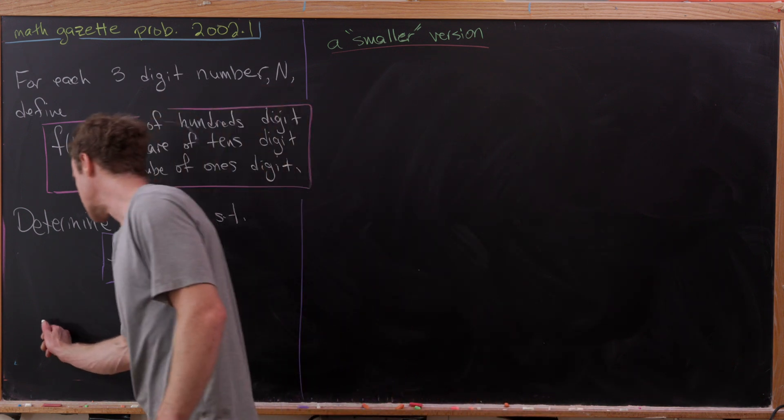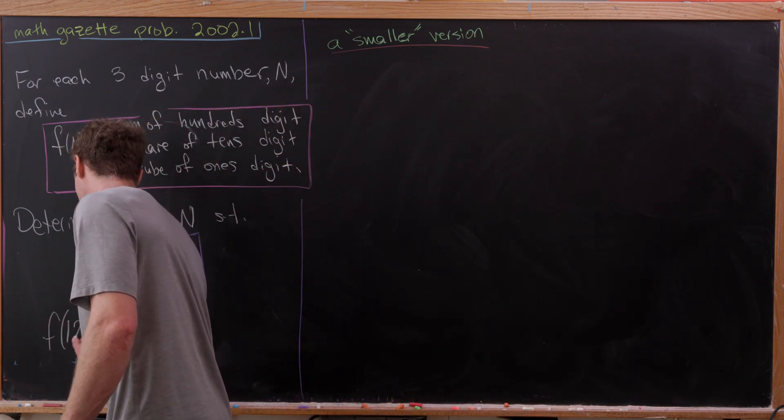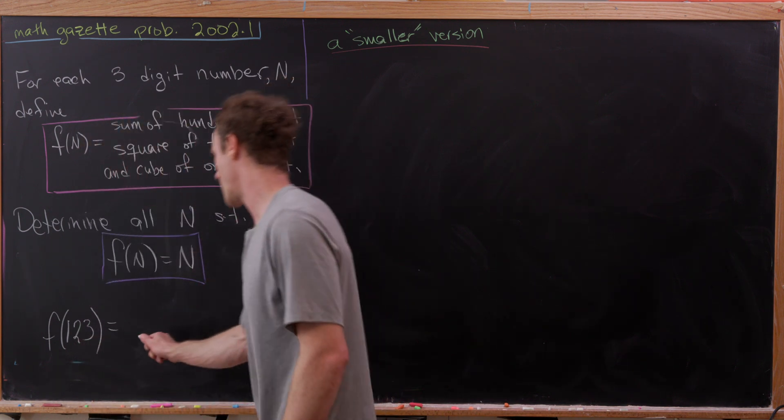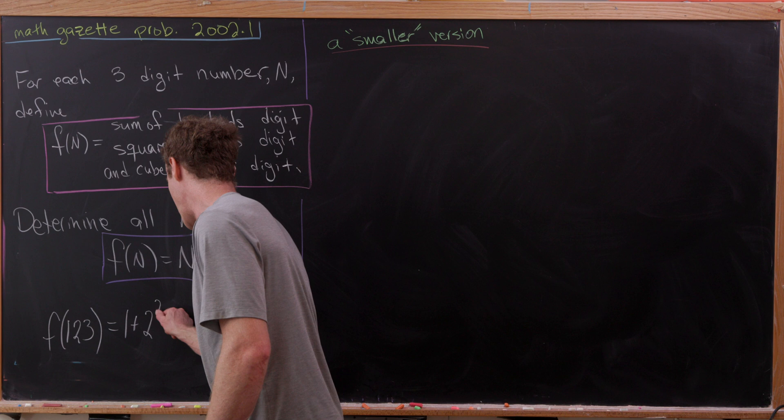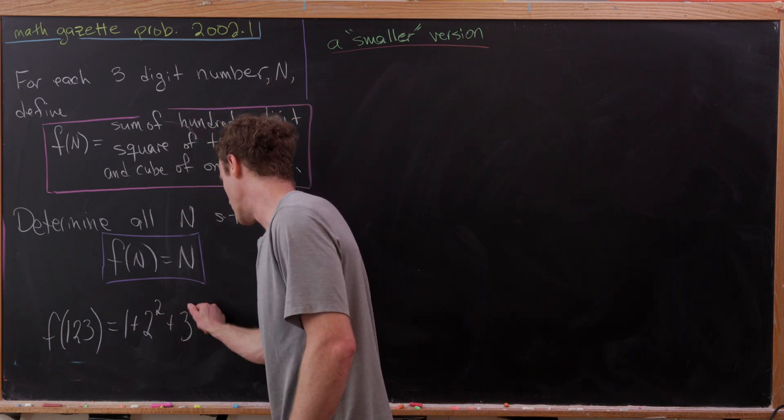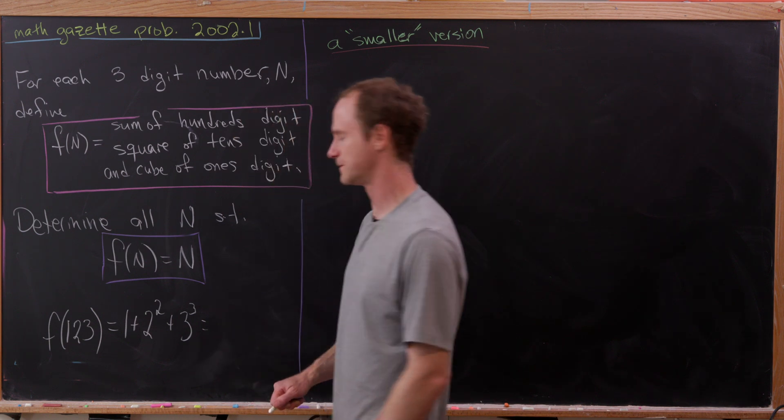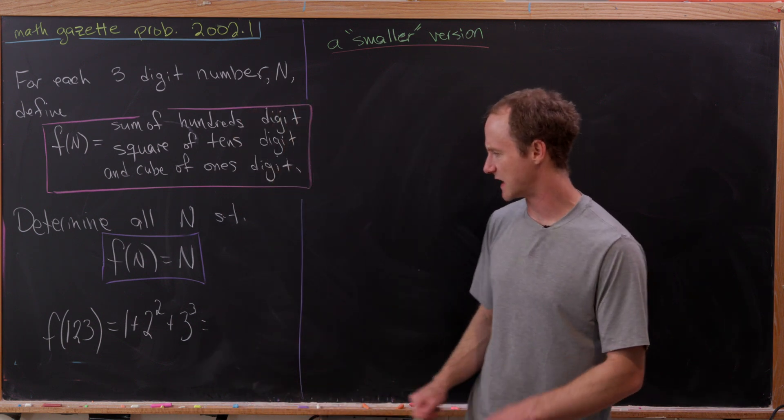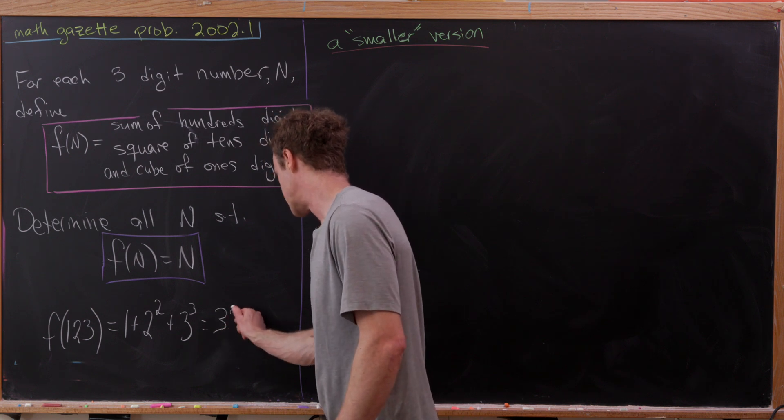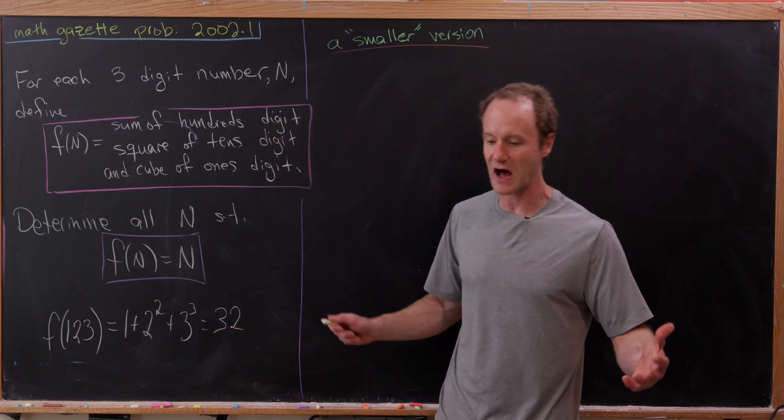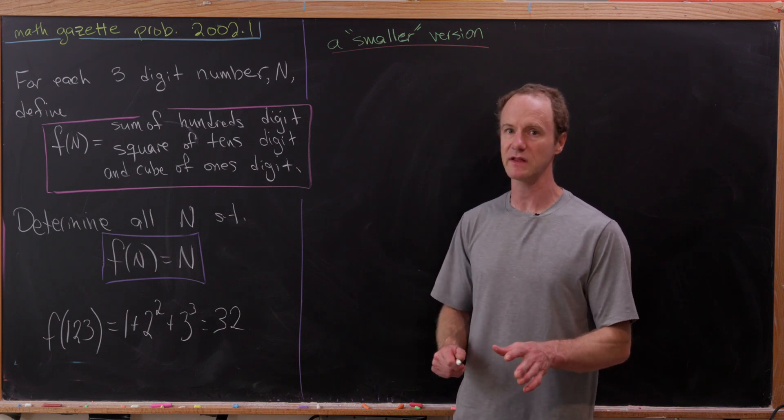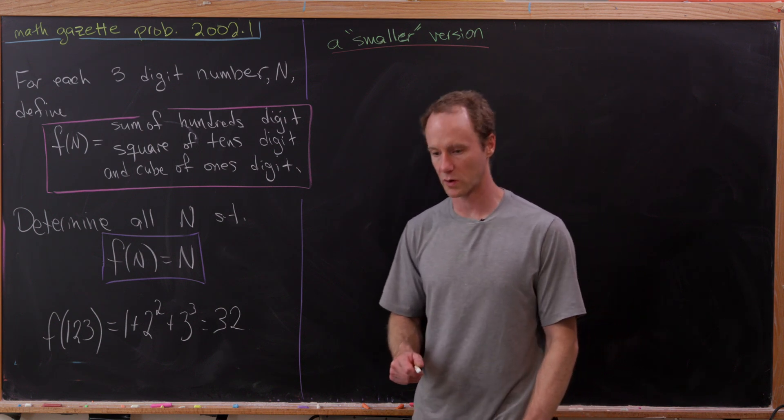As an example, we could look at f of 123. So it's going to be the hundreds digit plus the square of the tens digit plus the cube of the ones digit. That ends up being 1 plus 4 plus 27, which is 32. So 123 is not one of these fixed points, but it gives us a feel for how this function works.